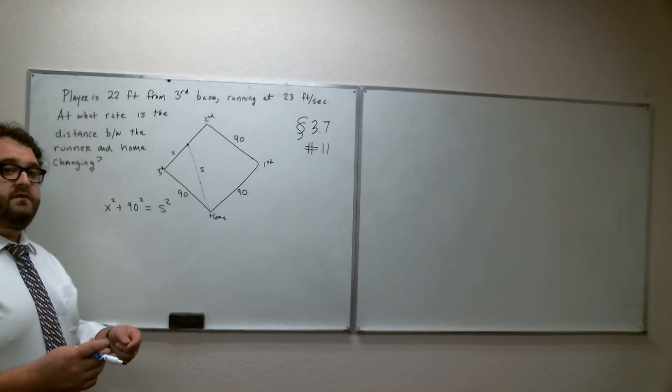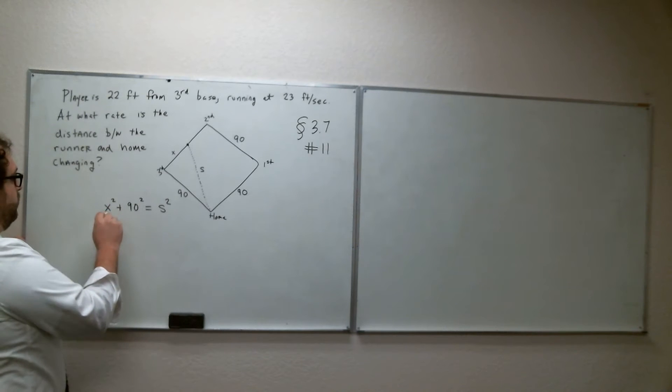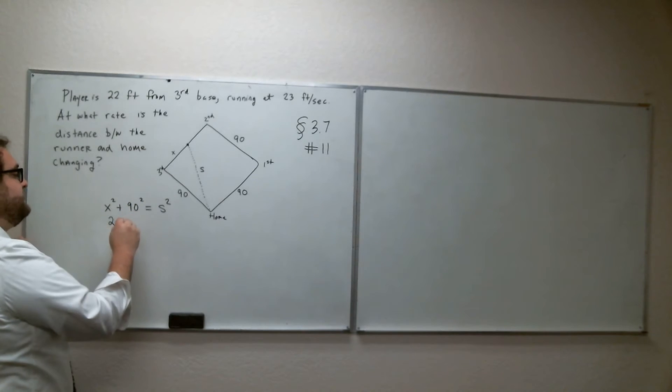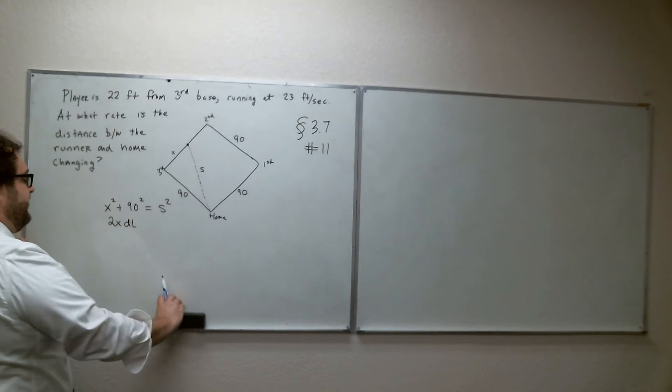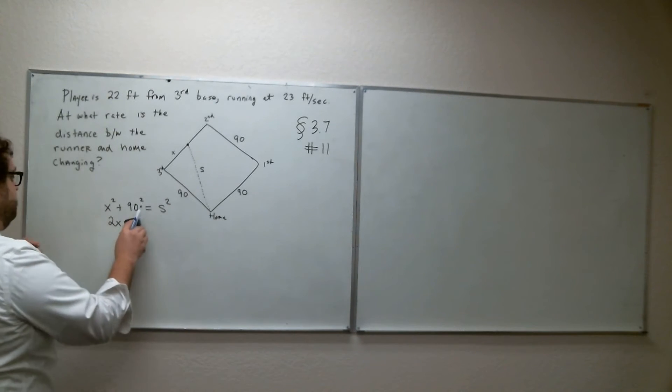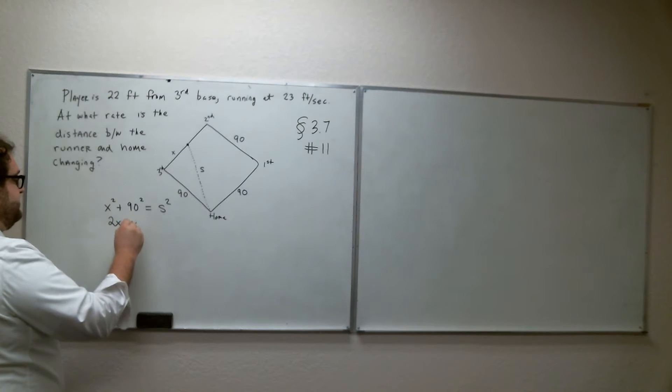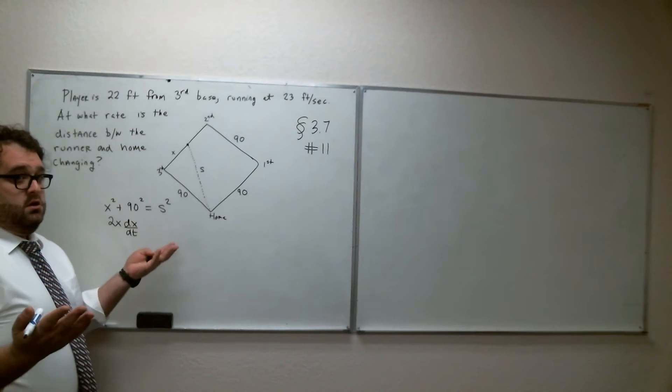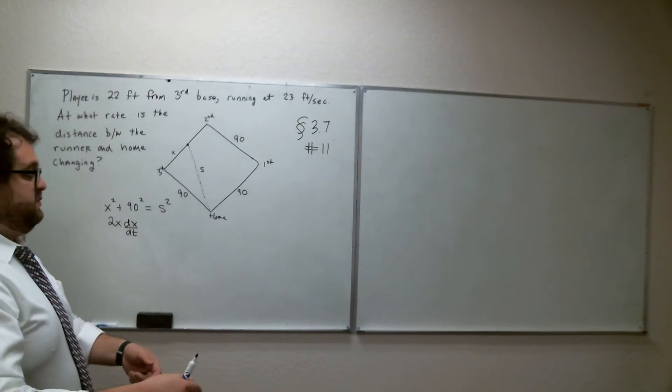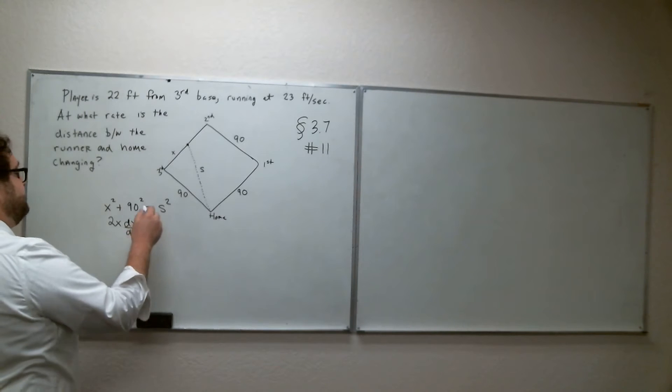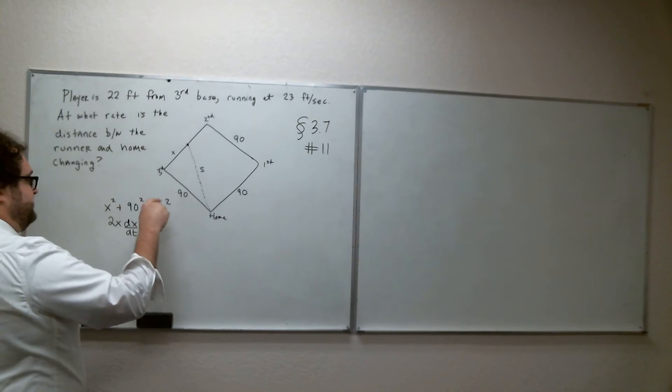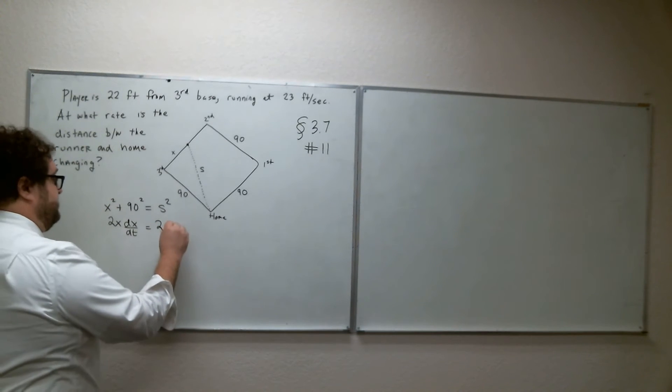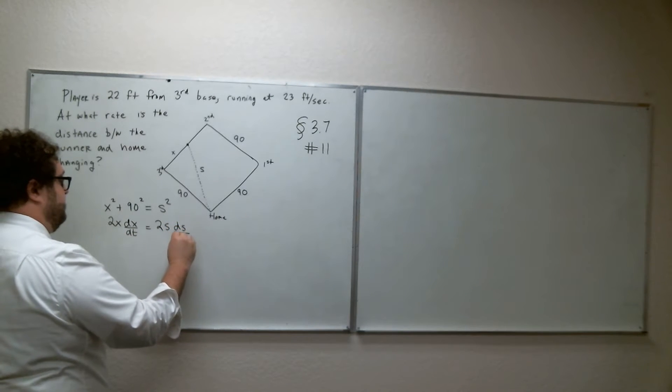Now, if we take the derivative with respect to T, what do we get? Well, we get 2X, but we just took the derivative of an X term with respect to T. So we have to multiply by DX/DT. Now, if I take the derivative of 90 squared, I get 0 with respect to T, with respect to X, with respect to any variable. The derivative of a constant is always 0, so that goes away. And then we have the derivative of S squared gives us 2S, but we're taking it, again, with respect to T. So we have to multiply by DS/DT.